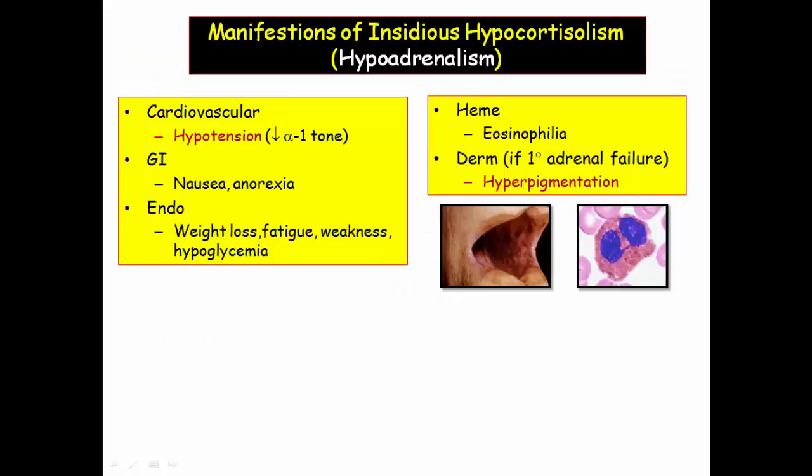Let's look at the manifestations of hypocortisolism, focusing on those that should command your attention. Almost all patients with low cortisol will be described with weight loss and fatigue. The blood pressure will be listed as subnormal, and on the extreme, they might present with low glucose. The big ticket item will be hyperpigmentation, but only if from adrenal failure. Remember, you need a high CRH or ACTH level for excess pigmentation, which is generally seen in sun-exposed regions.